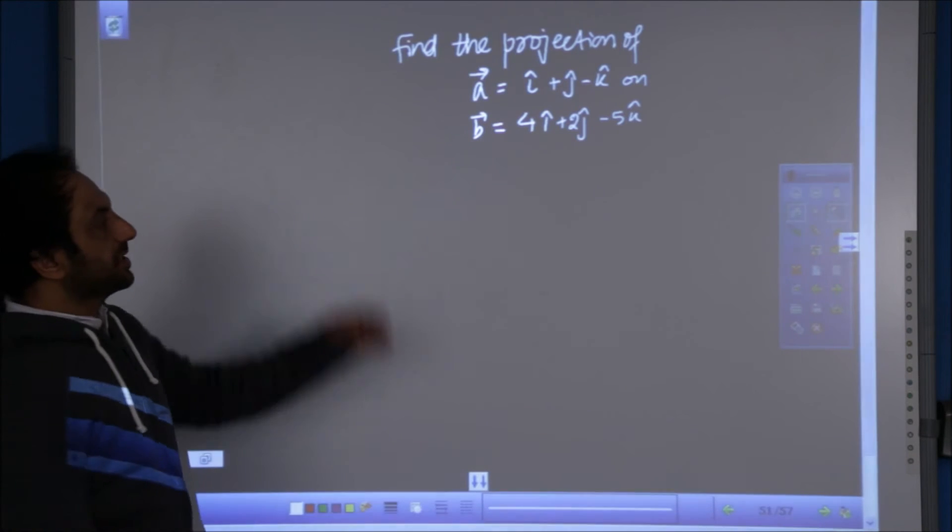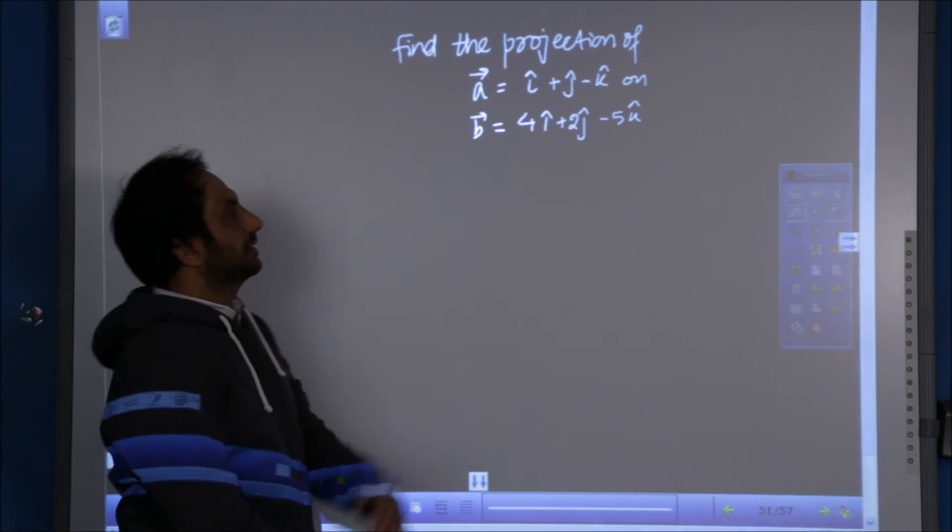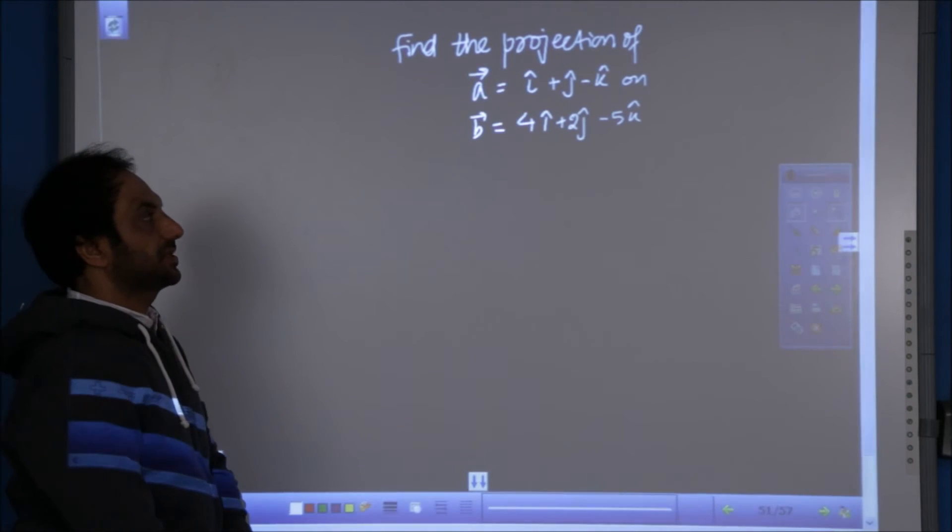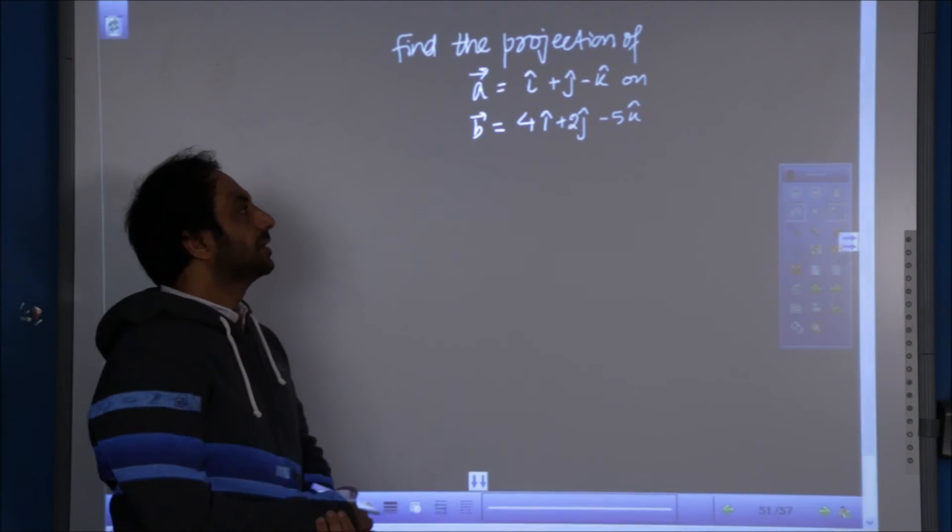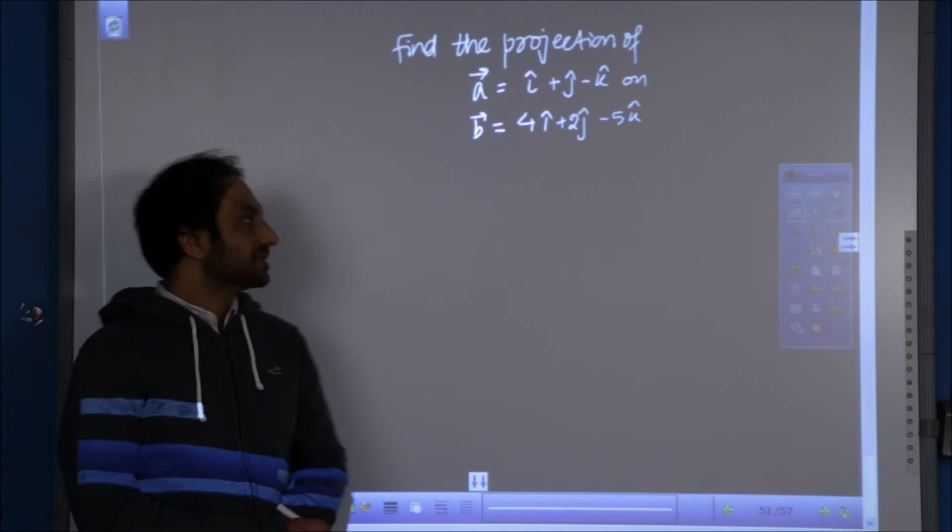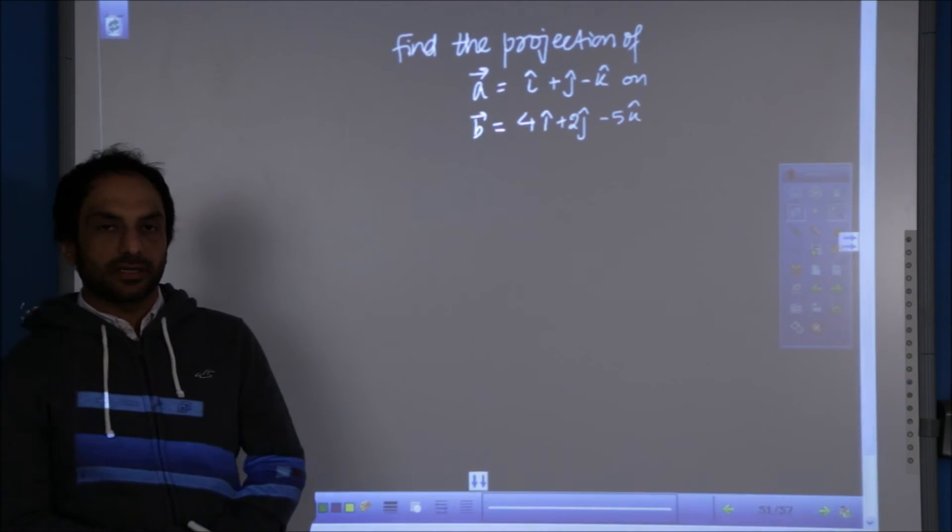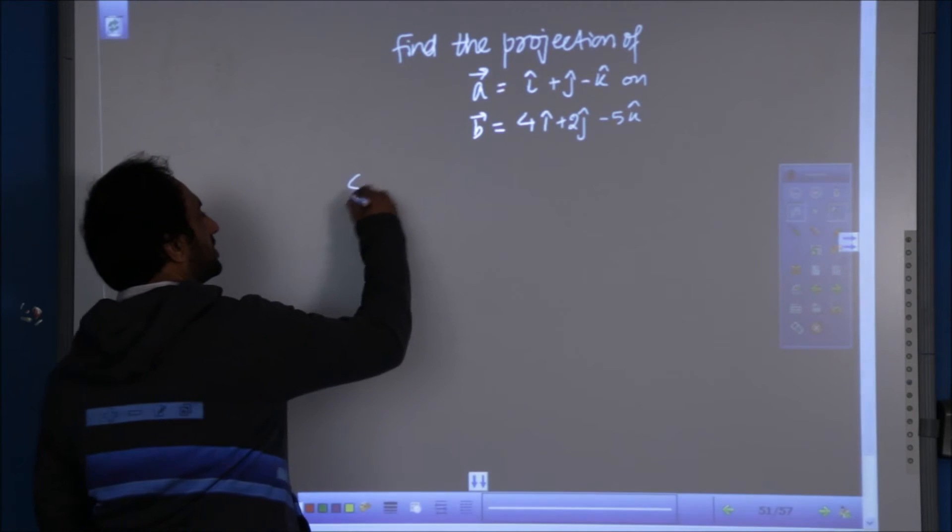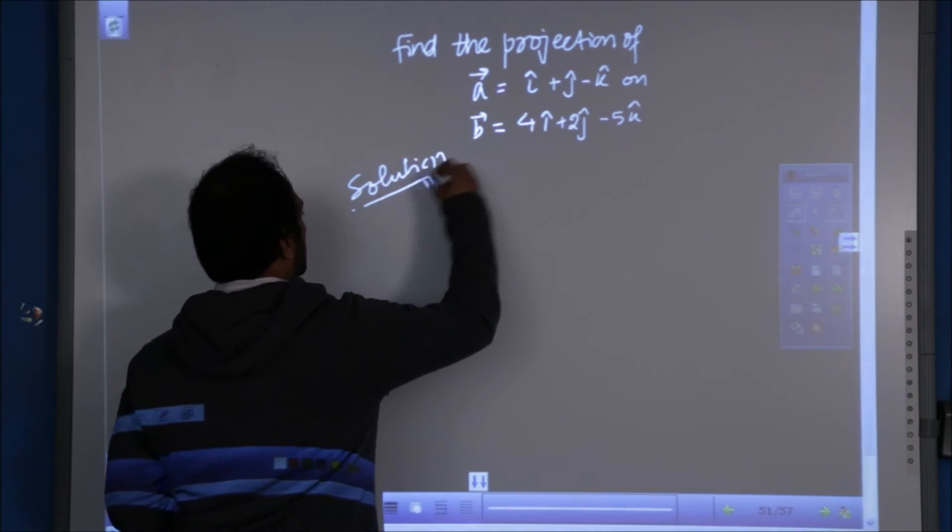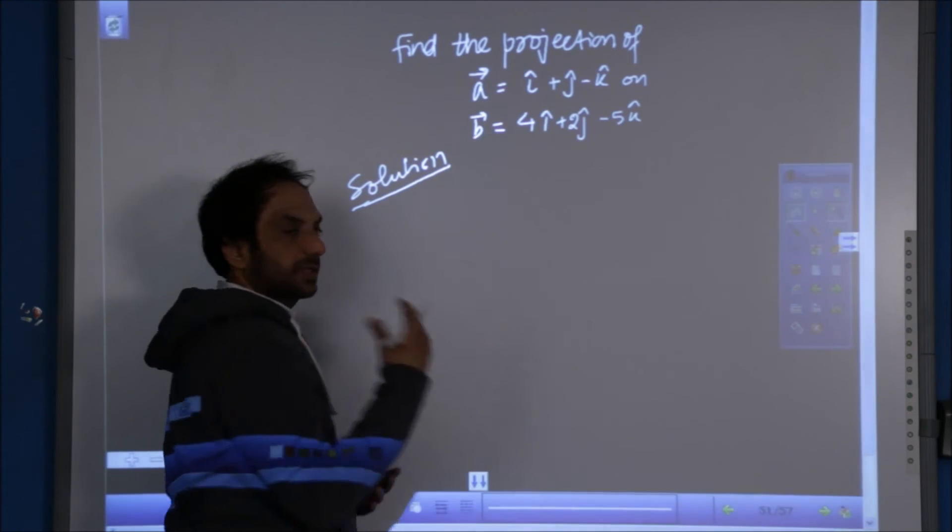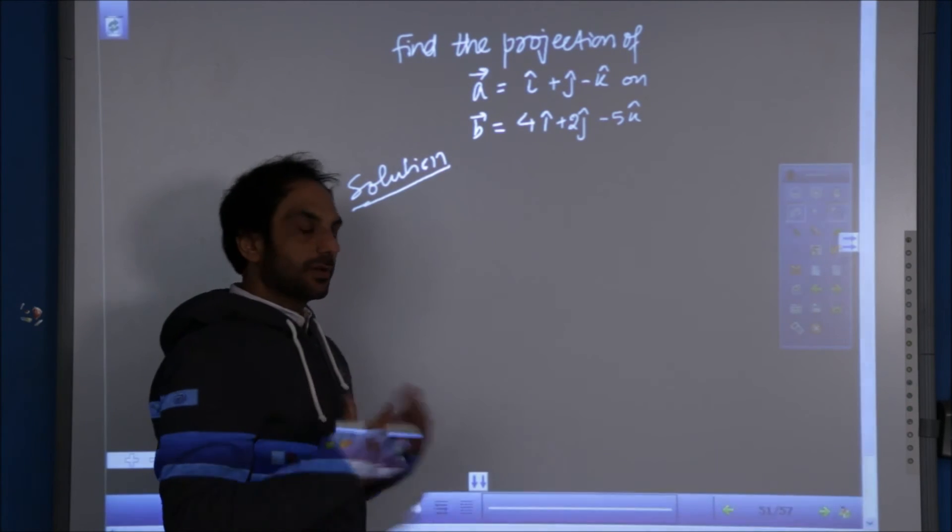Find the projection of A vector on B vector. A vector is given as I cap plus J cap minus K cap on B vector, which is 4I plus 2J minus 5K. Now we will find the solution together. We know the formula that because we need projection of A on B, it is simply A dot B over mod B.